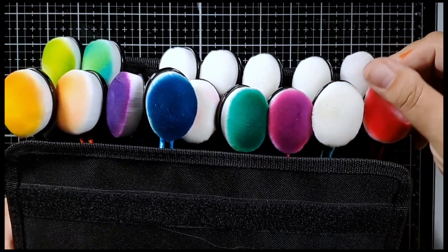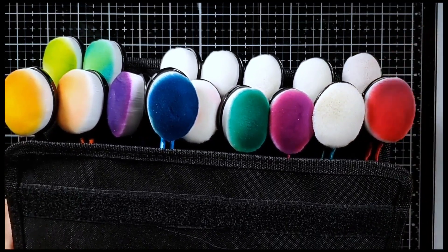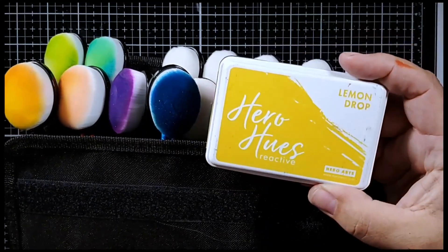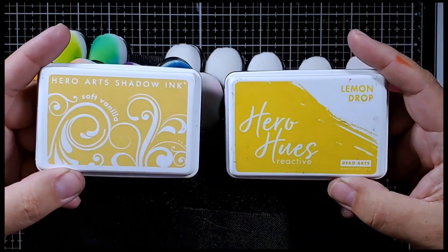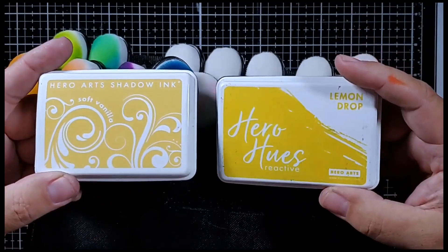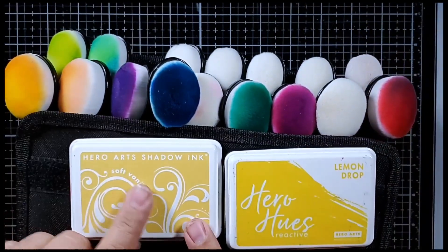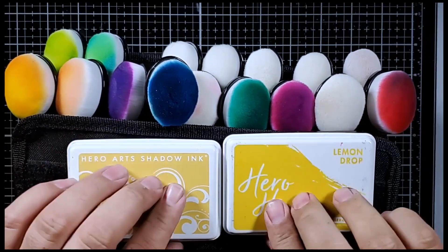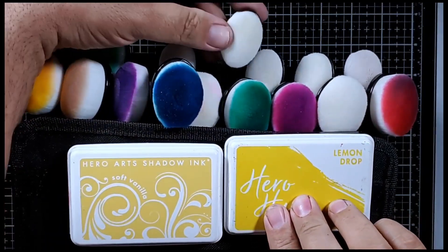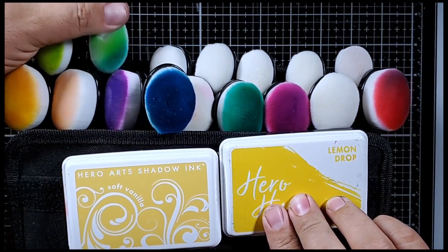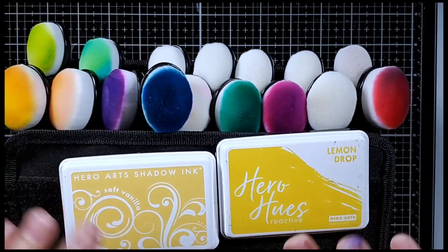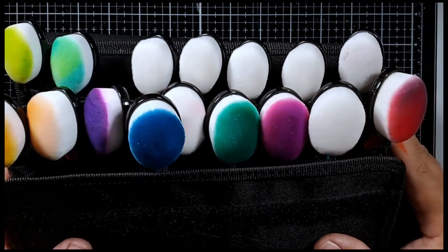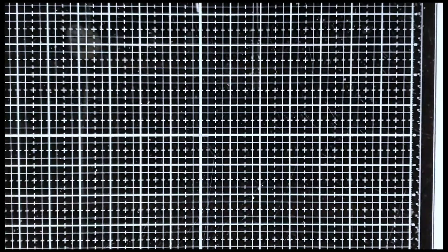They are very light in their application. I can make a very soft application or a very deep and dark application. I have two sizes here, of course they come in a pack of two sizes. The larger size I use for the dye inks and the smaller sizes I use for hybrid inks like the Hero Hughes reactive line. I do that because I don't want to mix the pigment inks with my dye inks and my brushes.